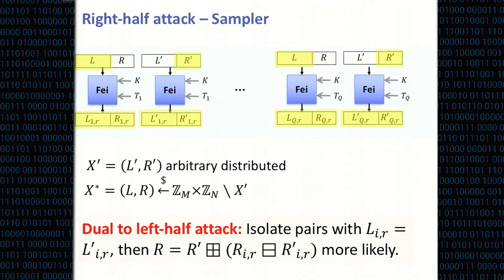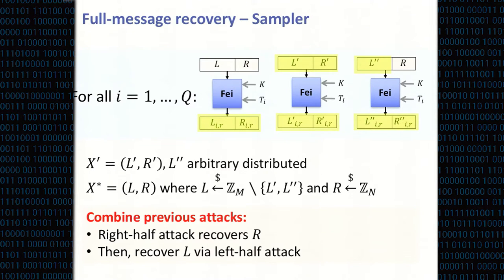We have two additional attacks. One is a dual of the first, and by combining both attacks we obtain a full message recovery attack in a setting where three messages are encrypted over many tweaks. One of the three messages is completely unknown and we are able to recover it entirely.